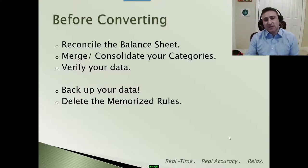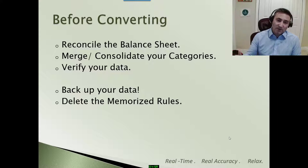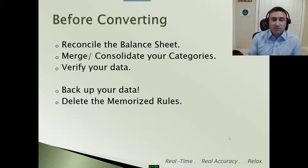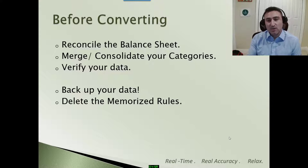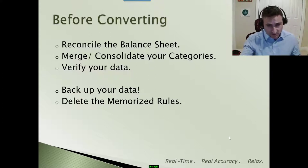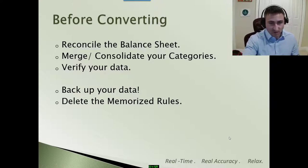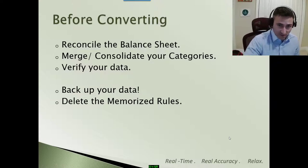The final tip is the biggest gotcha: delete all the memorized rules. The memorized rules are all the rules that Quicken records as you download from your banks and your credit cards. You want to delete all of those because they do not translate well once in QuickBooks.